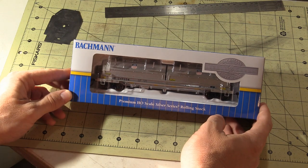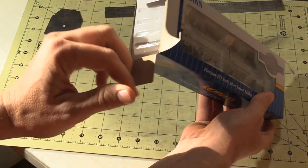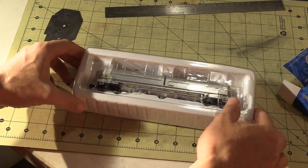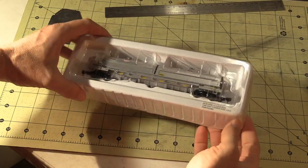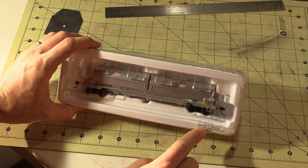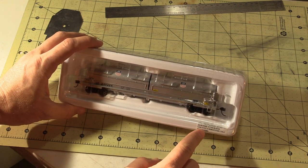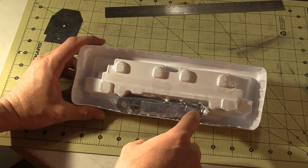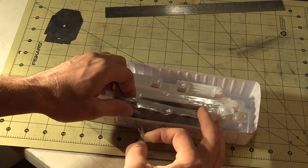Alright, so we're going to start with the initial unboxing like we always do. Pretty standard model box here. And then there's no paperwork inside there, so it's just the model in the packaging. It does have a note here that says the steel coil is packaged separately. It's on the reverse side of the blister pack. And sure enough, the steel coil loads are back here. We'll go ahead and take them out.